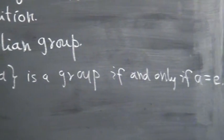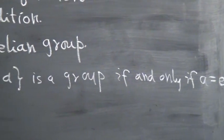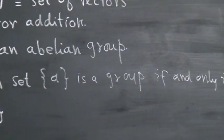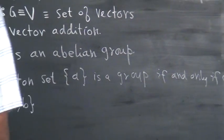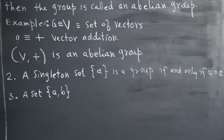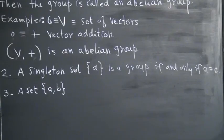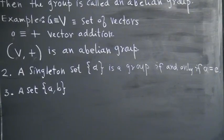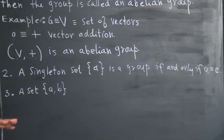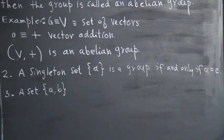With two elements, A comma B, when will this be a group? If I have two elements, when will this be a group? One of them should be identity, so let's say A is identity. Then what should be B?